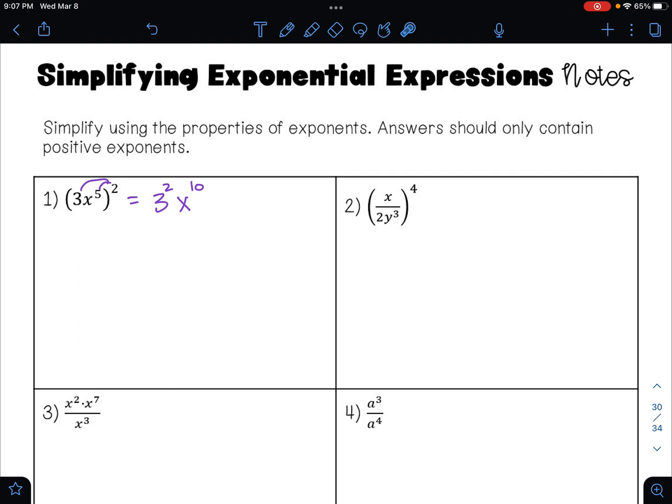Because remember that this 3 has an exponent of 1. So 1 times 2 is 2. This x has an exponent of 5. 5 times 2 is 10.